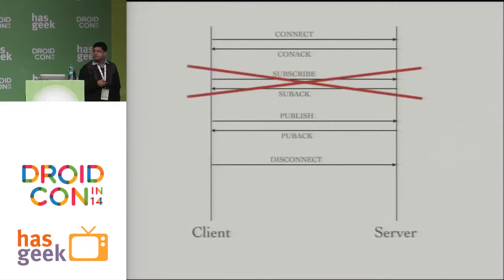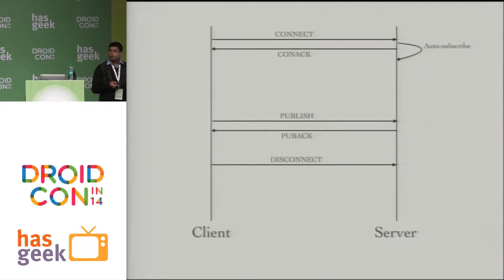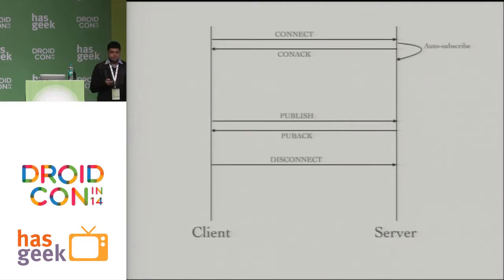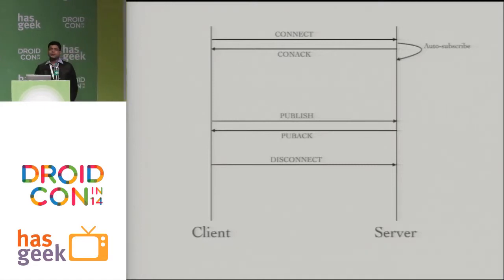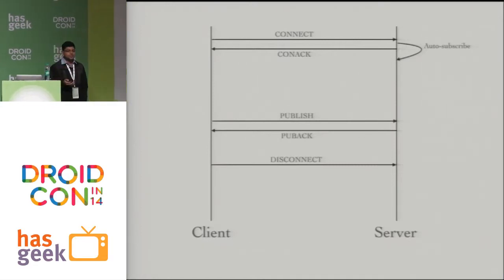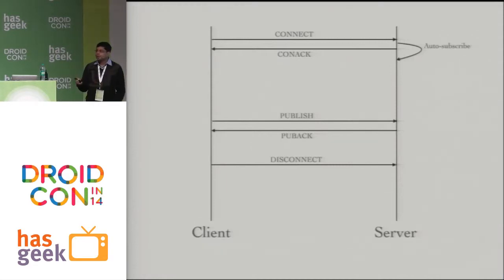We delved into this and figured out where we could still save bytes. We said let's do away with the subscribe and suback and do an auto-subscribe at the server level itself. At the scale of 35 million users, just avoiding two packets amounts to a huge reduction in network traffic. So the connect request itself makes the server do an auto-subscribe for that client.